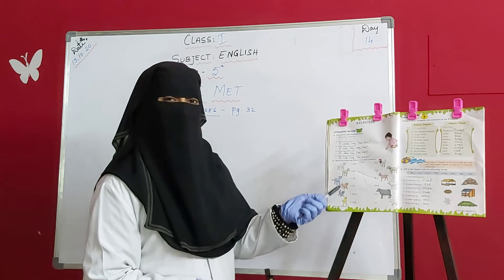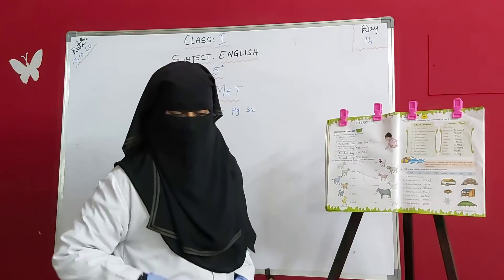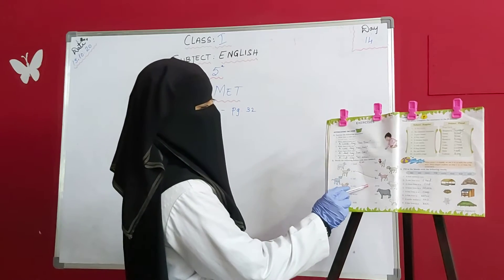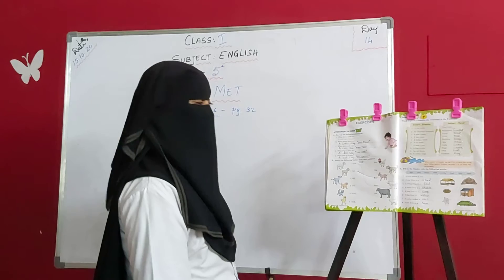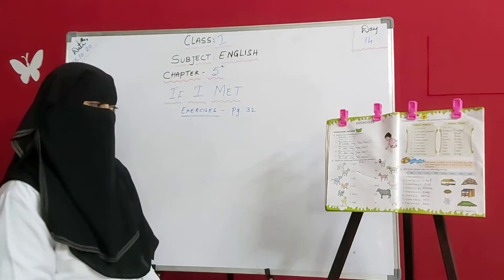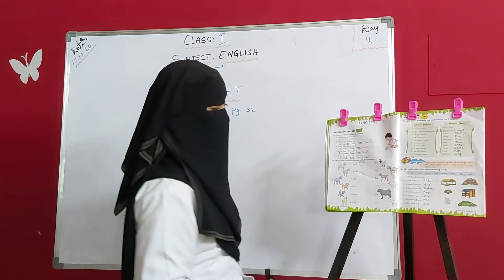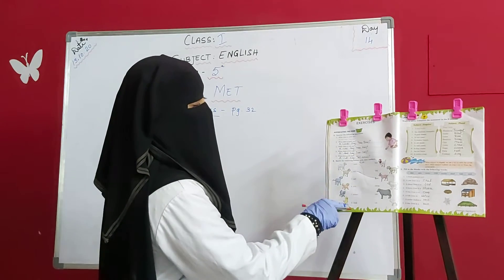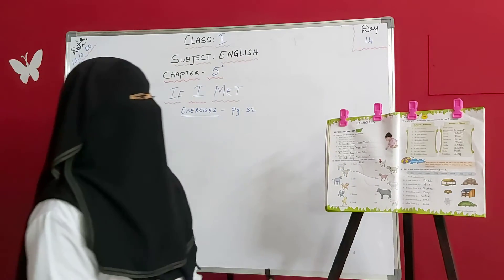Now we come to match the following — babies with their mothers. The first one is lamb, and we match it with sheep. The mother of a lamb is a sheep. Next one, kid — the picture is of a goat's baby. A baby goat is called a kid, so we match it with goat. The rest — calf, pup, kitten, and chick — matching with their mothers is your homework.